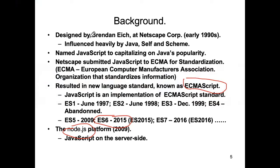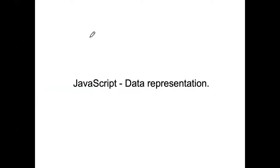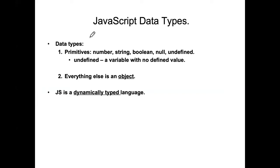JavaScript data representation is all about objects. There are some primitive types as well, but it's all about objects — and that's where I think you're already comfortable. It's important that you're comfortable navigating an object network. JavaScript is a dynamically typed language, which means you can change the type of value that you assign to a variable at any stage.